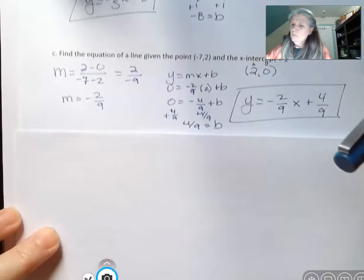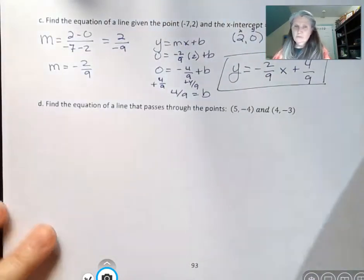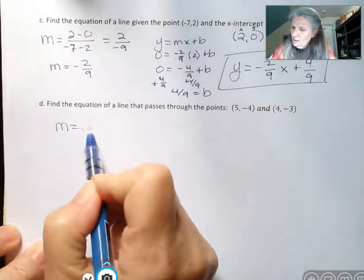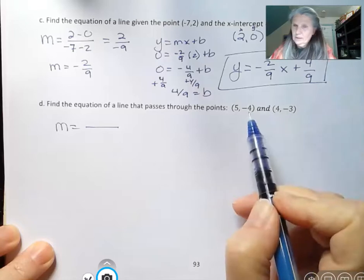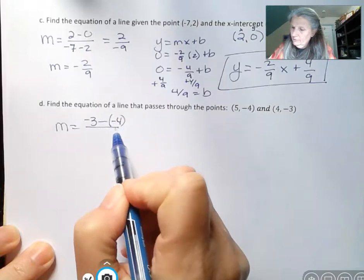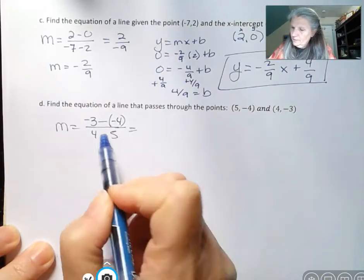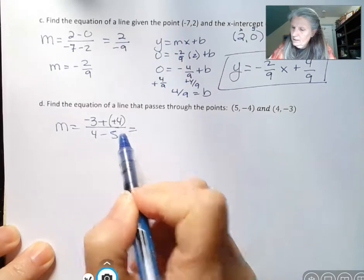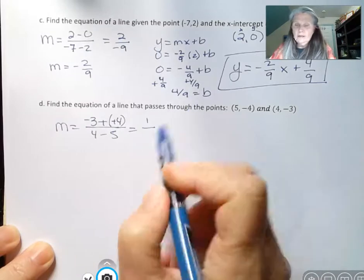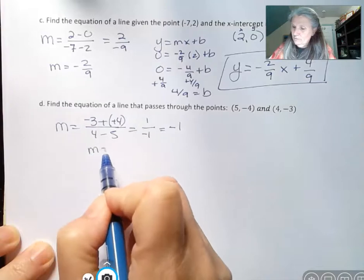And one more with two points. I'm passing through these two points right here. And I'm going to first find the slope by subtracting those two y's. Let's say negative 3 minus negative 4, and then 4 minus 5. Negative 3 minus negative 4 is actually negative 3 plus 4, so that's 1. And then 4 minus 5 is negative 1. So I get negative 1 for a slope.